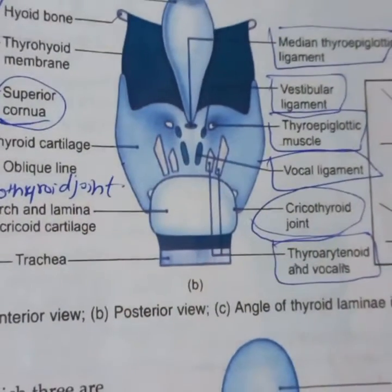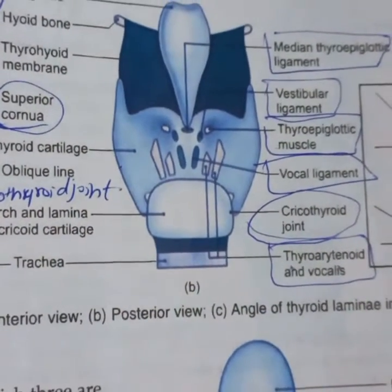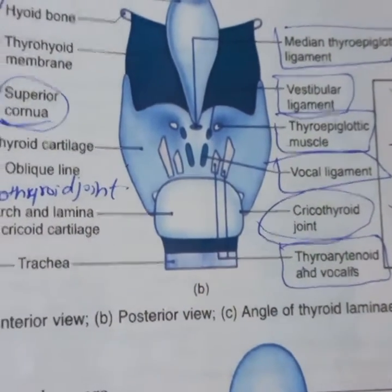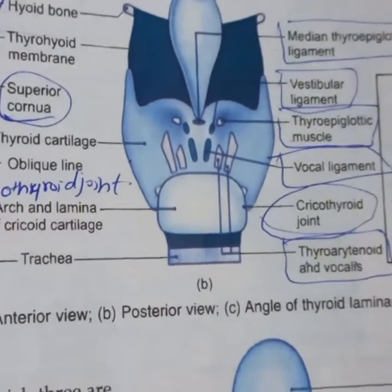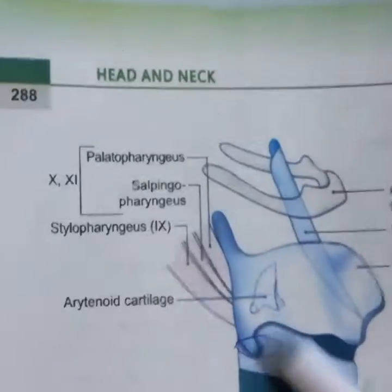On the inner aspect of the thyroid cartilage, we also have the vestibular folds and the vocal folds along the posterior border.